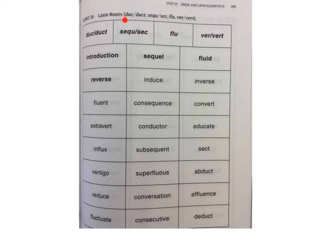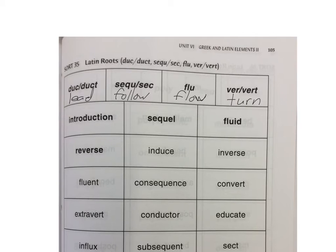In this sort, we're going to look at our Latin roots DUC or DUCT, SEQU or SEC, FLU, VER or VERT, and we're going to look at what they mean. They put in here what each one of these roots kind of means. It's not going to be a direct translation when you're trying to figure out the meanings, but duct is 'lead,' SEC or SEQU is 'follow,' FLU is 'flow,' and VER or VERT is 'turn.' Go ahead and sort them first, and then I'm going to get into the meanings when we look at the actual columns.